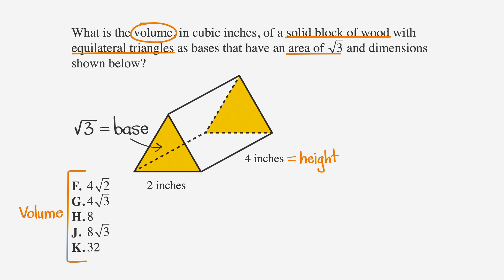Now let's write out our formula. Volume equals the area of the base times the height. We know the area of the base is the square root of three, and the height is four, so putting these into the equation for the volume of the block, we find that the volume is four times the square root of three, which is choice G.